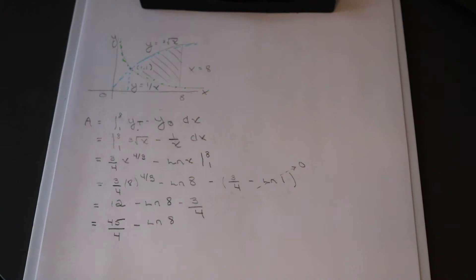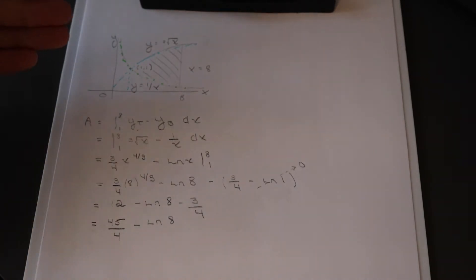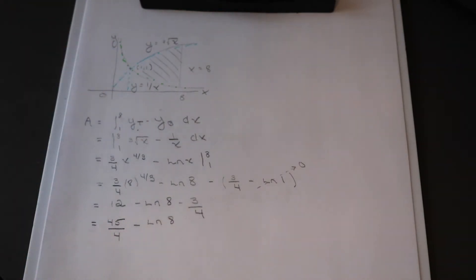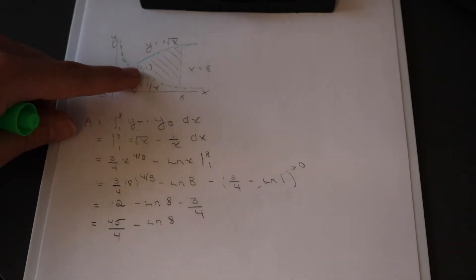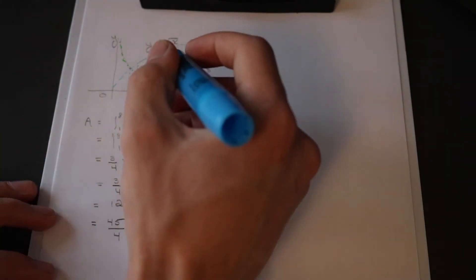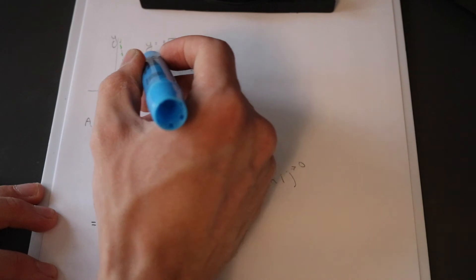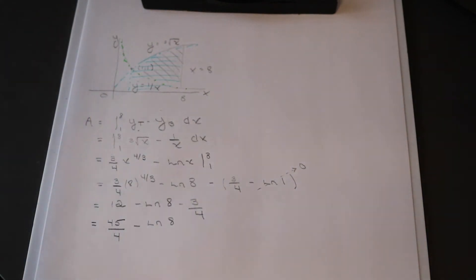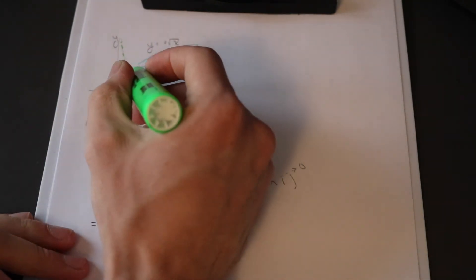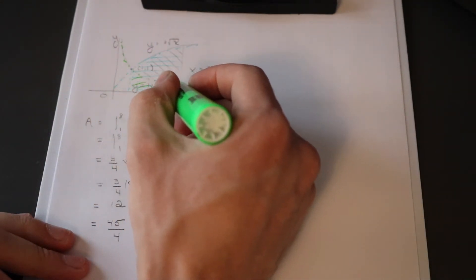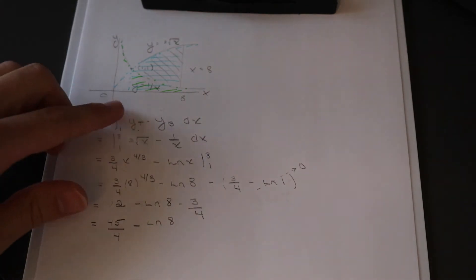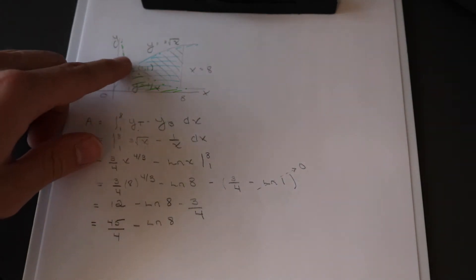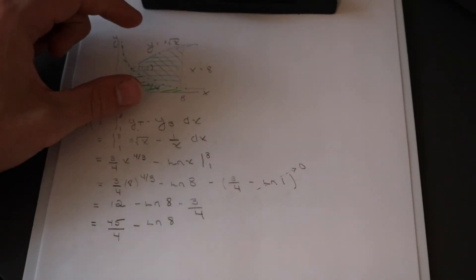To re-clarify: when we integrate, we calculate everything below the top curve down to the x-axis, then subtract everything below the bottom curve down to the x-axis. This makes sense — if we only want the area between the curves, the first integral covers all the way down, the second covers the portion below the bottom curve, and subtracting the two eliminates that bottom section, leaving just the area between them.